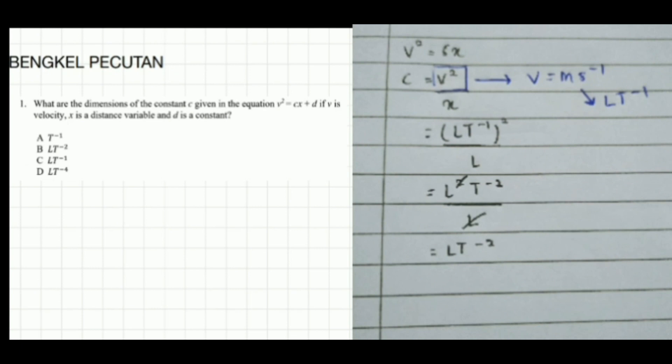D is constant, so in the equation v squared equals cx plus d, d becomes zero because it's constant. We want to find C. So v squared equals cx. When we rearrange to get C, we get C equals v squared over x.